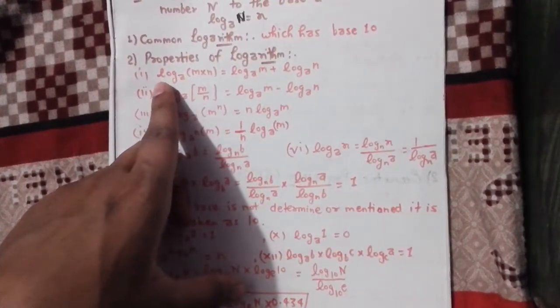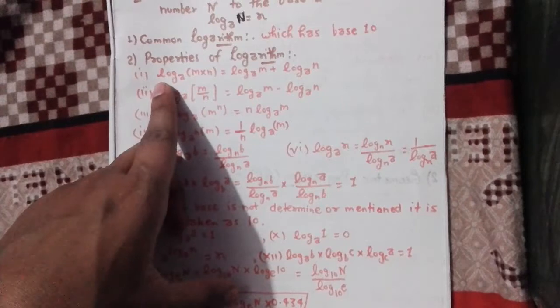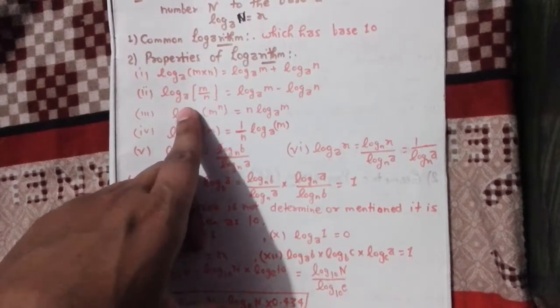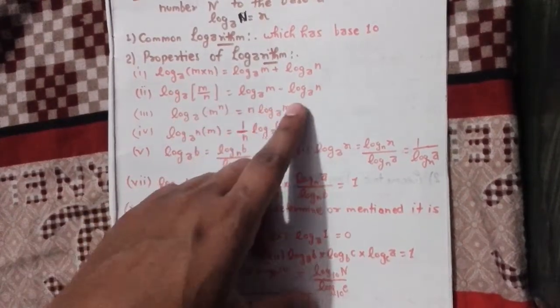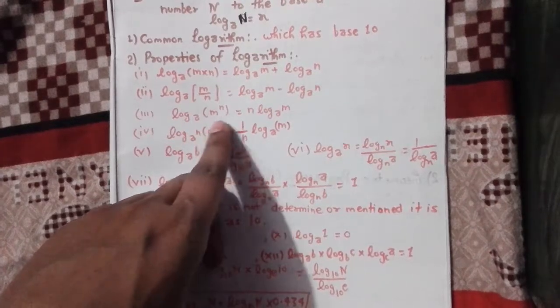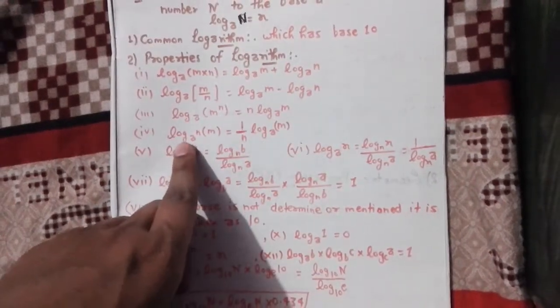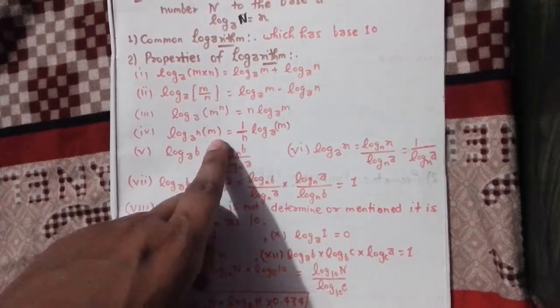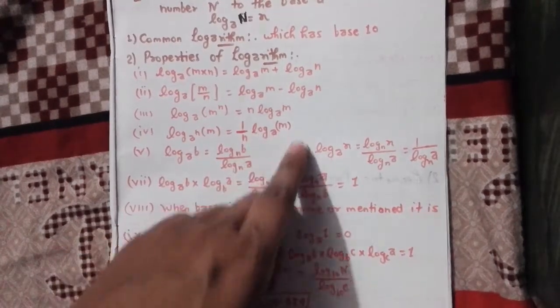Log_a(m × n) is equal to log_a m plus log_a n. Log_a(m/n) is equal to log_a m minus log_a n. Log_a(m^n) is equal to n log_a m.